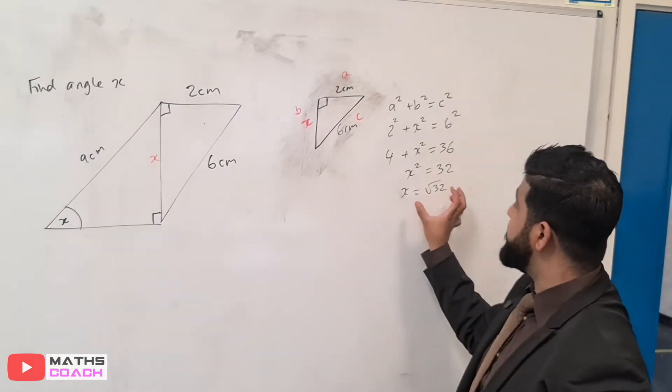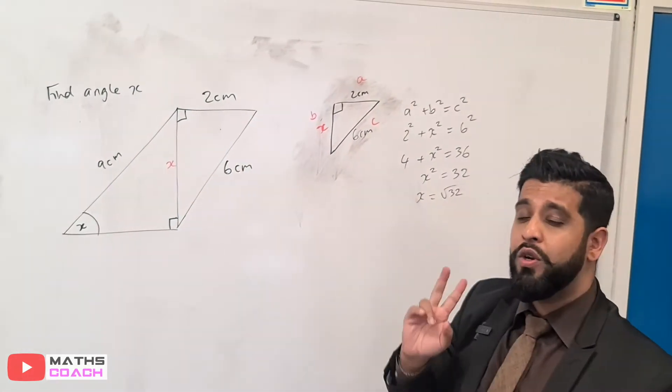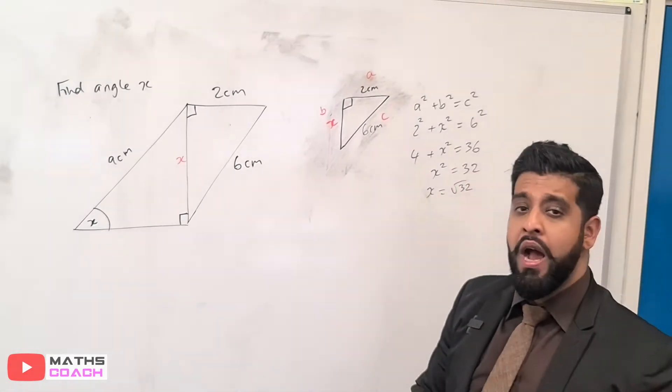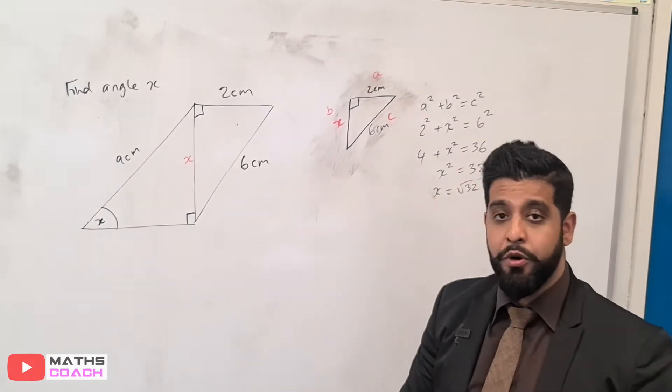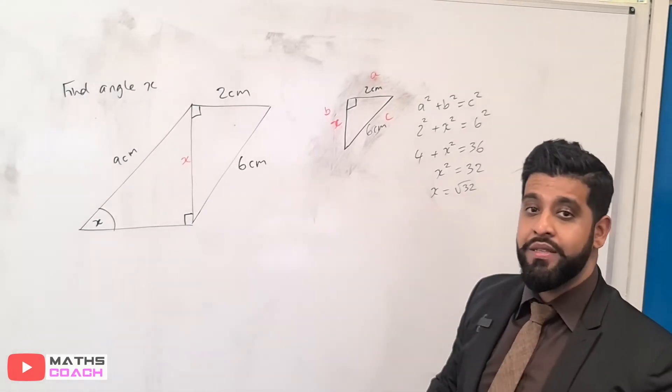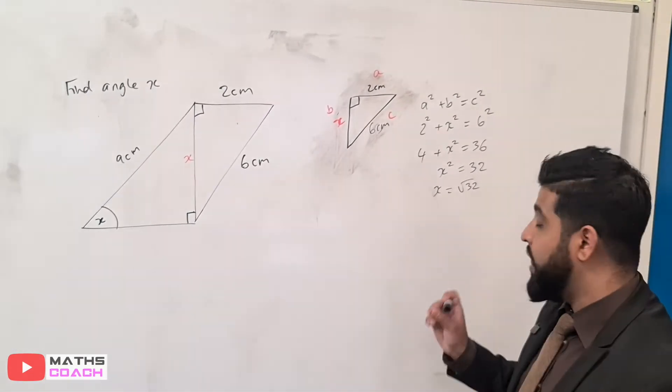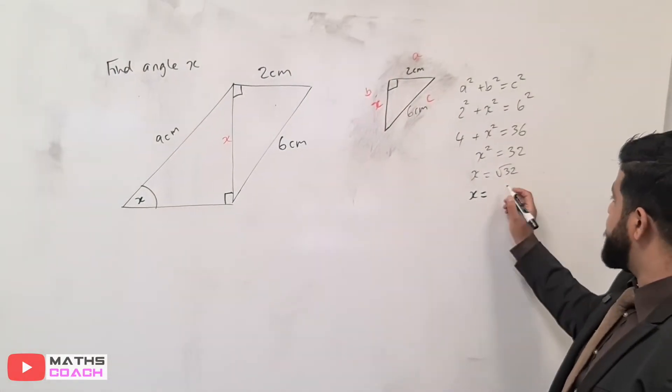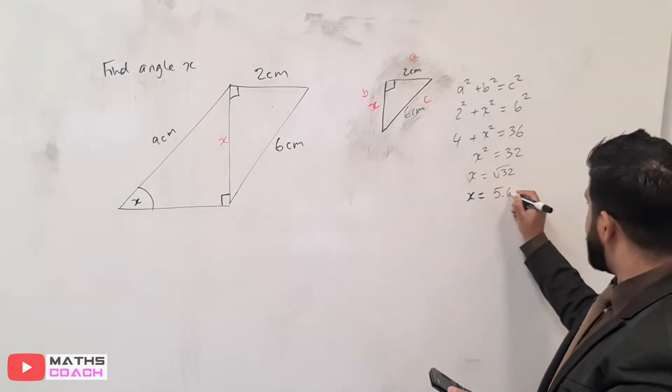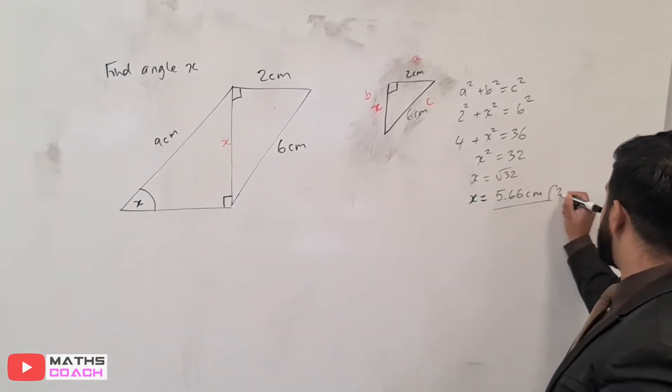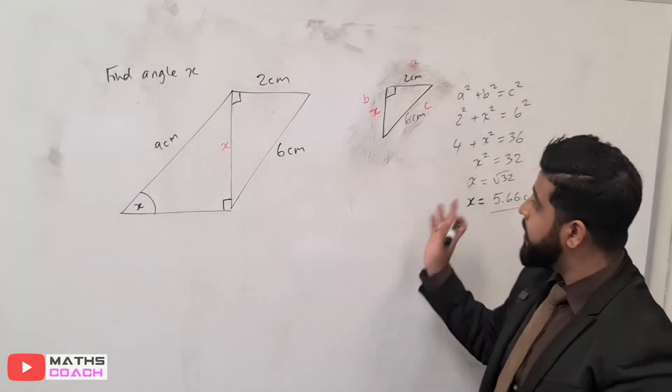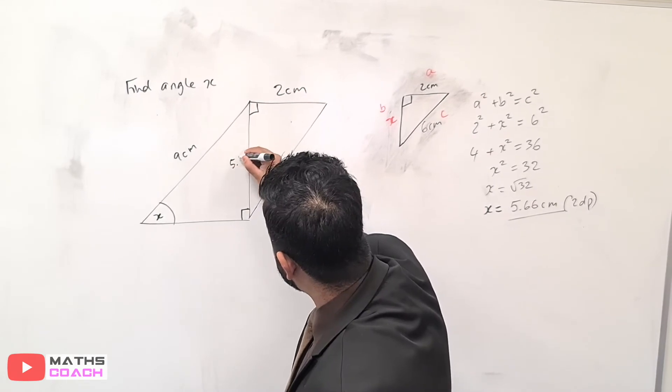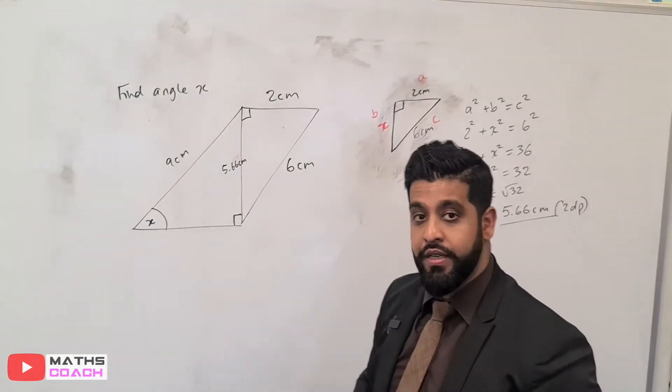Because we are going to be using this value over here, you can do one of two things. To keep it accurate, you can keep your answer as root of 32, or you can round it to an appropriate degree of accuracy. Try to keep as many decimal places so that you don't lose that accuracy. I'm just going to grab my calculator and find what that value is. To two decimal places, this rounds to 5.66 centimeters.